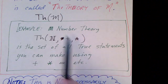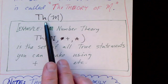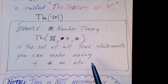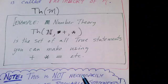And we can talk about the theory of this model as the set of all true statements that we can make using these symbols. Now again, notice that this is not necessarily the set of statements that we can prove.